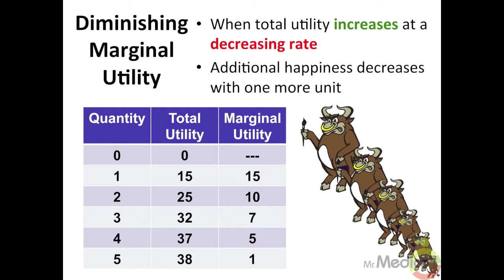Lastly, as consumers continue to purchase even more quantities, total utility will reach its peak and then eventually fall. The marginal utility curve is the slope of the total utility curve — that's the change in total utility divided by the change in quantity. Initially, marginal utility increases as quantity increases, known as increasing marginal utility, which is then followed by diminishing marginal utility. When marginal utility becomes zero, total utility is maximized; when marginal utility becomes negative, total utility falls.